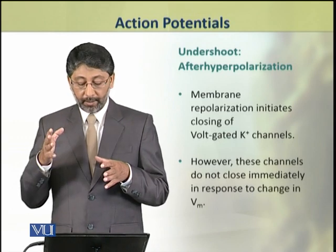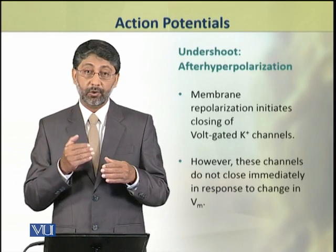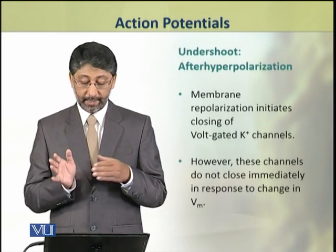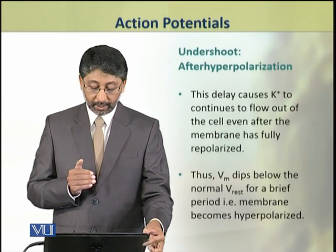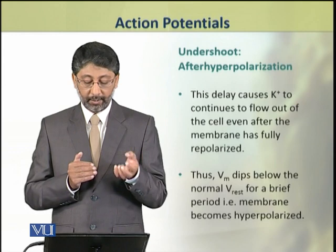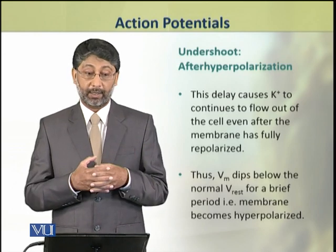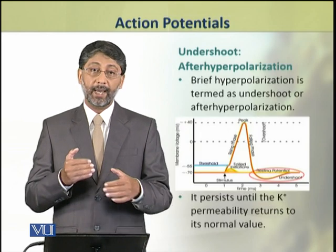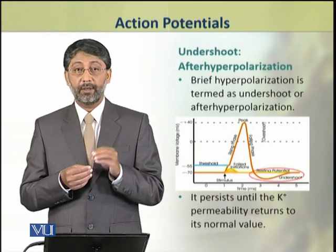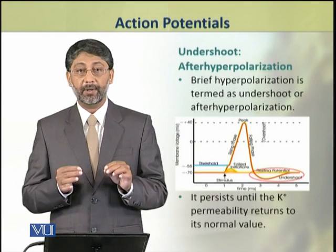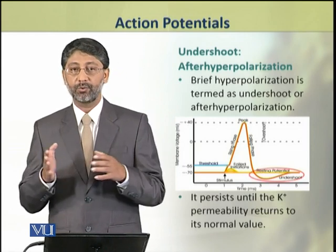However, membrane repolarization initiates the closing of potassium channels. Since potassium channels are delayed rectifiers, they are slow to close, so potassium ion outflow continues. As a result, the membrane potential dips even below the normal resting membrane potential, becoming hyperpolarized. This brief hyperpolarization is known as the undershoot or after-hyperpolarization, and it persists until potassium permeability returns to its normal value.